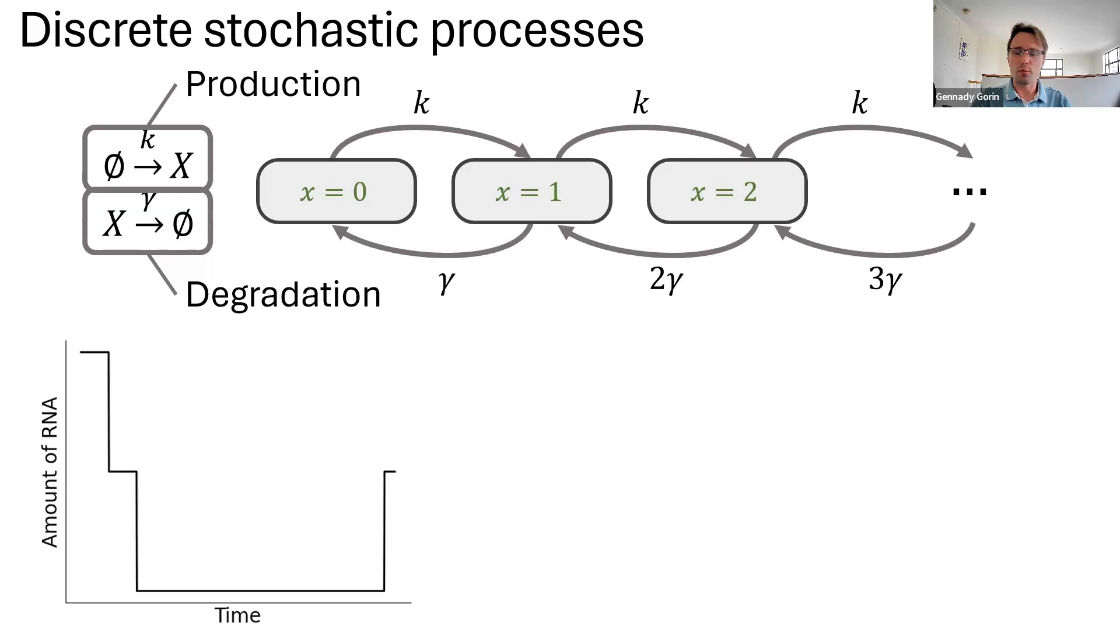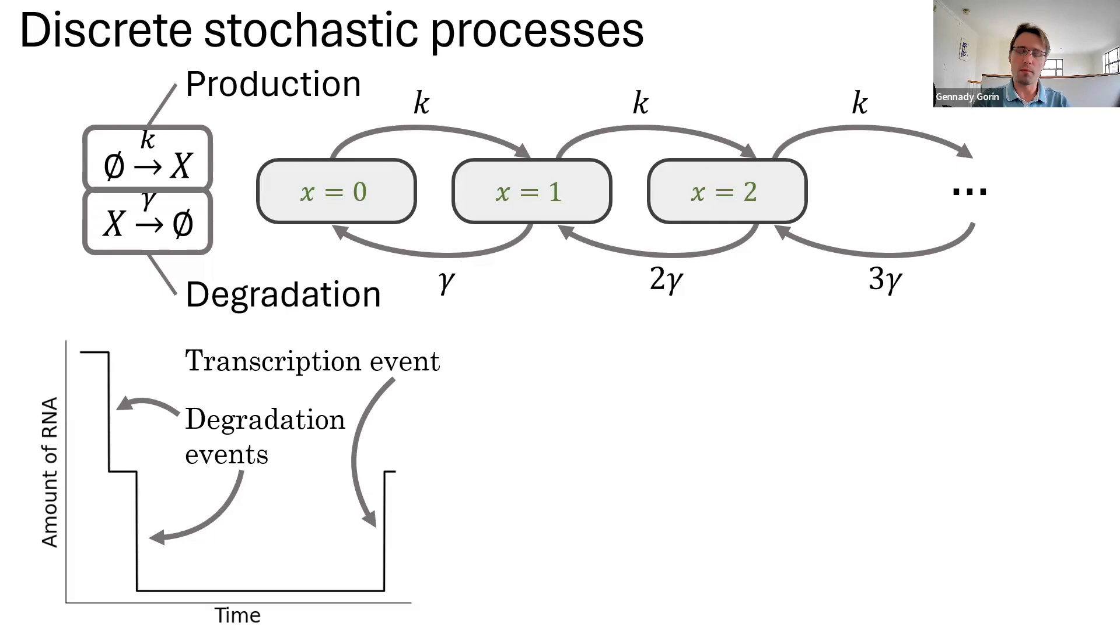And we end up getting the correct behavior. We get trajectories that track the number of RNA molecules and represent individual transcription and degradation events, which either increase or decrease the amount of RNA. And when we look at many trajectories, it turns out the solution with no noise accurately describes their average. So, now we seem to have a really compelling candidate for a biological model with discrete data.